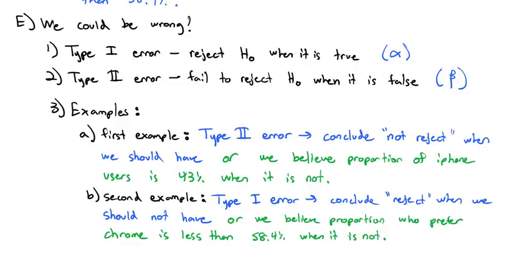Those errors hopefully don't happen often to us, but there's always a chance they could, because with hypothesis testing we're never sure of anything. We could be wrong, and that's what type 1 and type 2 errors tell us — what does it mean if we're wrong. So we covered a lot today: we introduced hypothesis testing and how it works, did several examples in the context of proportions, and briefly covered type 1 and type 2 errors. Take a look at the assignment if you want to try a few of these.